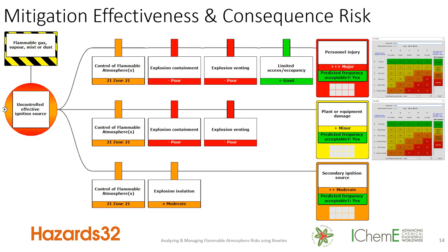On the other side, you have the means to mitigate the explosion. Here we have controlling the flammable atmosphere — how are you going to control it? Are you going to use ventilation? Are you going to use less material? A variety of different means of how you control that flammable atmosphere.